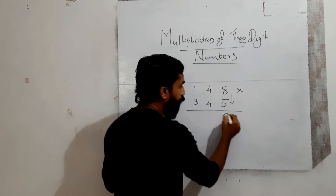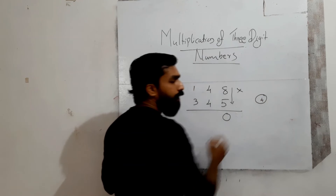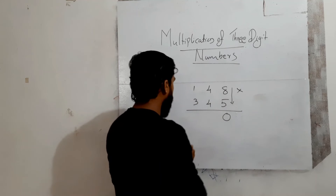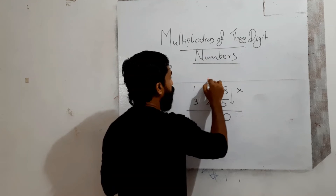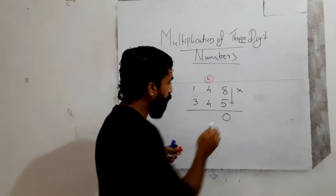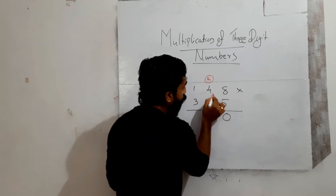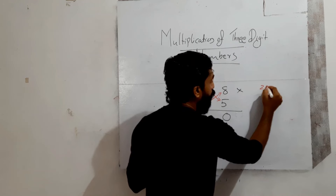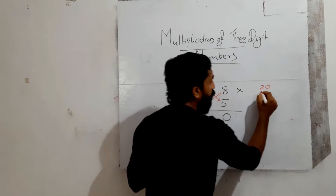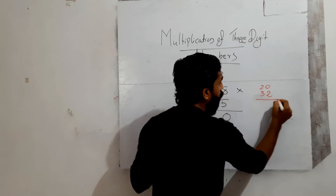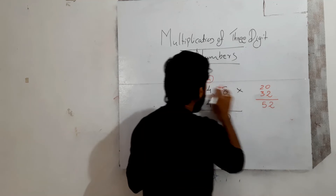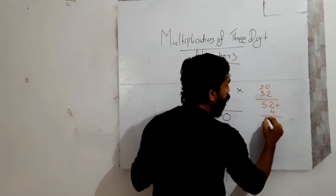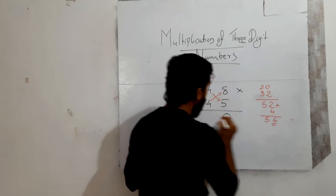Write the carry over 4. Next cross multiplication: 4 into 5 is 20, plus 4 into 8 is 32. So 20 plus 32 equals 52. Add the carry of 4: 52 plus 4 equals 56. Write 6, carry over 5.